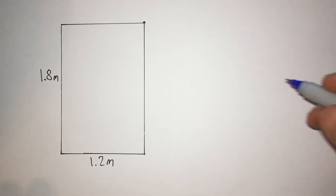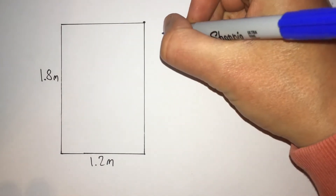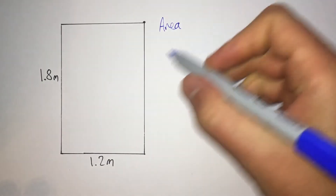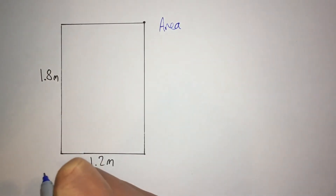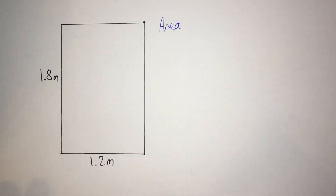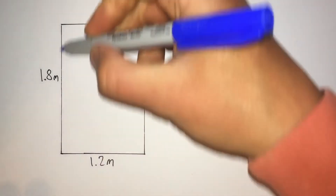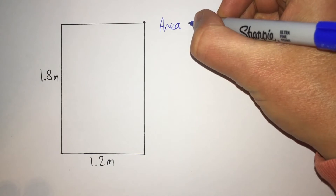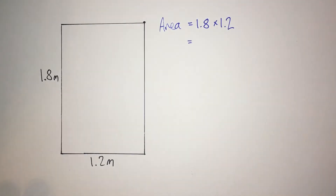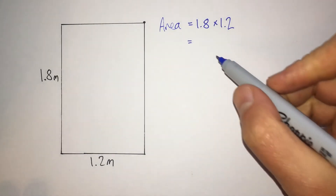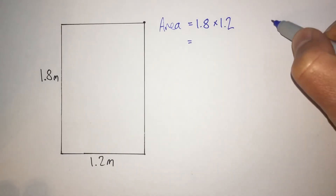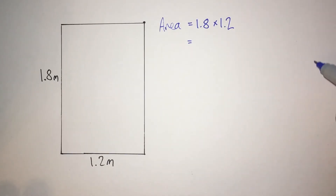Let's calculate the area without a calculator. The area of this space is equal to 1.8 multiplied by 1.2 in any order — 1.2 multiplied by 1.8 will give us the same answer. How would I do this without a calculator? I could do 18 multiplied by 12.